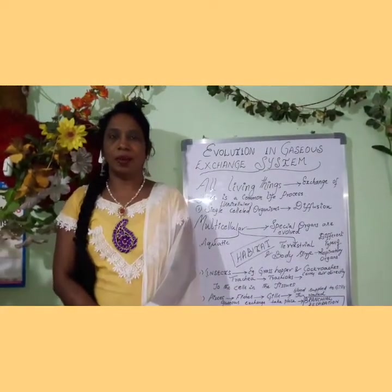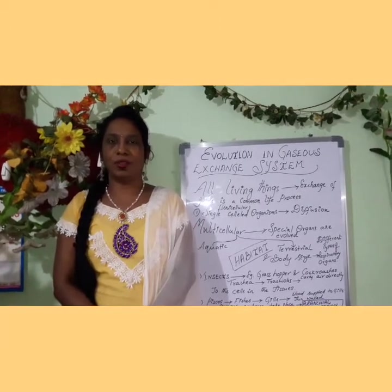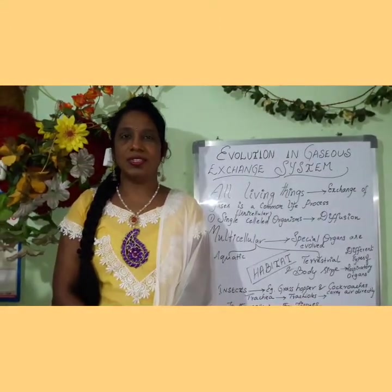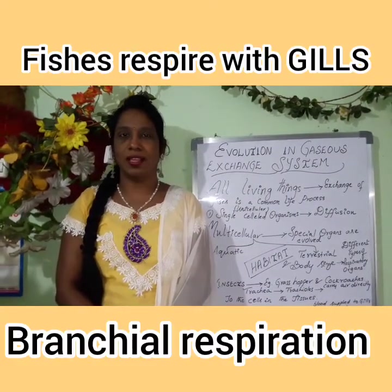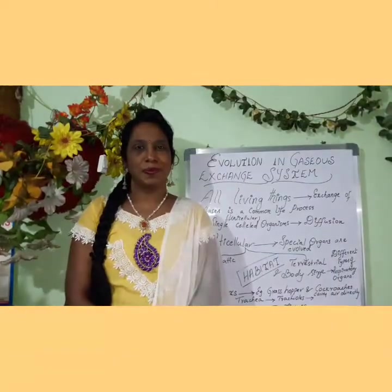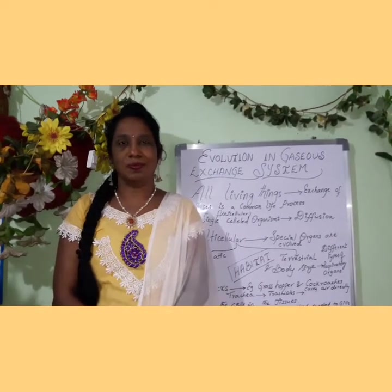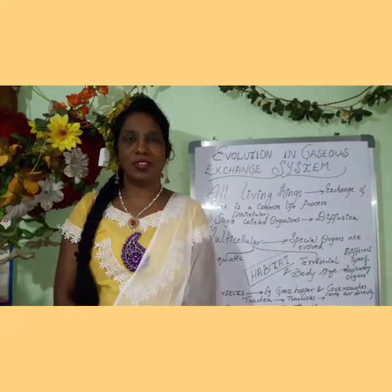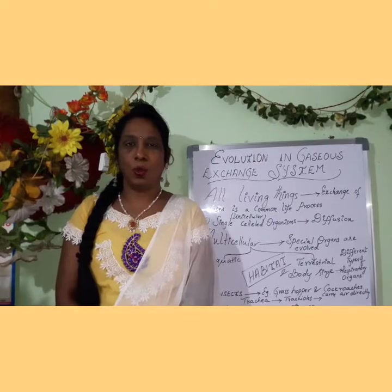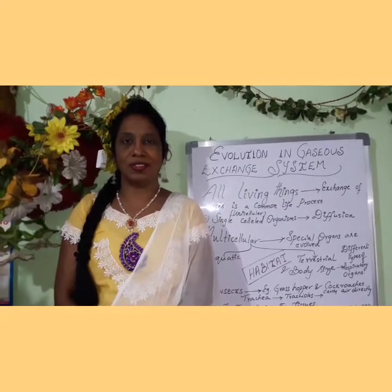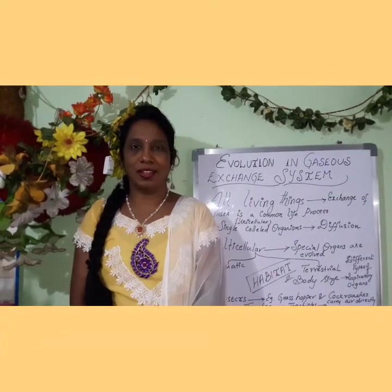If you take the example of fishes, they respire with the help of gills. This type of respiration is called branchial respiration. In fishes, the blood is supplied to the gills through capillaries which are thin-walled, where the exchange of gases takes place.